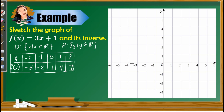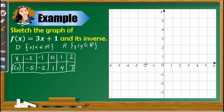We plot the points (−2, −5), (−1, −2), (0, 1), (1, 4), and (2, 7), then connect them. Since this is a linear function, we can extend the endpoints infinitely. Here is the graph of f(x) = 3x + 1. Next, let us find the inverse function.